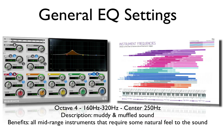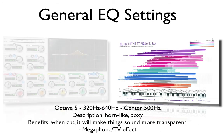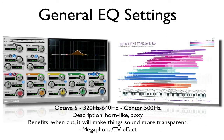Octave 4: 160 hertz to 320 hertz with a center point of 250 hertz. This gives you kind of a muddy or muffled type of sound. This benefits anything in the mid-range of frequencies, including vocals, and instruments that might require a little more natural feel. Octave 5: 320 hertz through 640 hertz with a center point of 500 hertz, will give you a horn-like or boxy type of sound. The benefit is that it makes things sound more transparent, like a megaphone or TV effect.